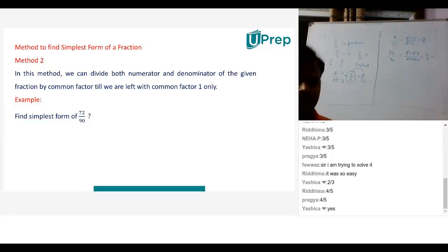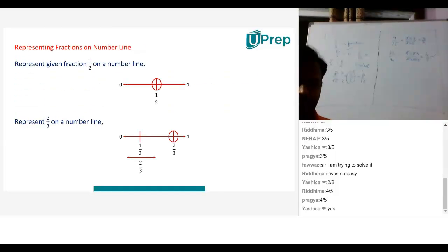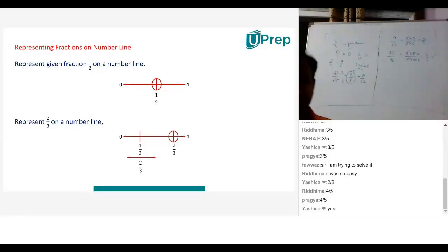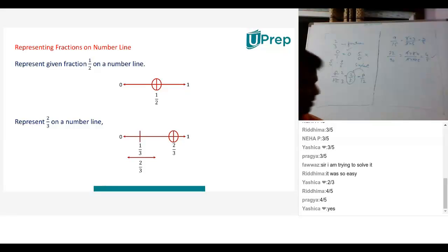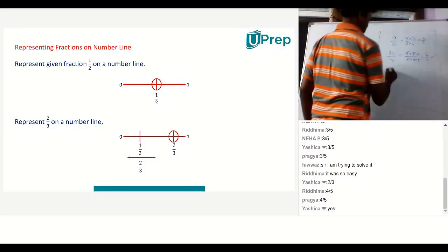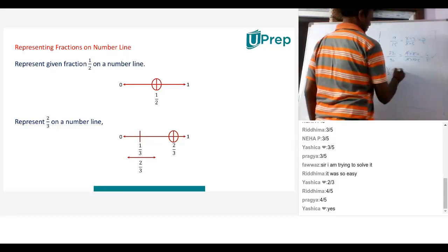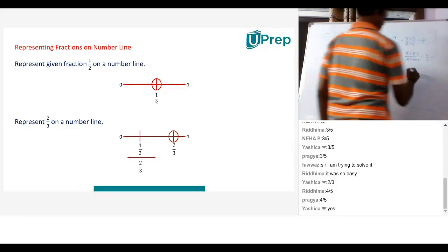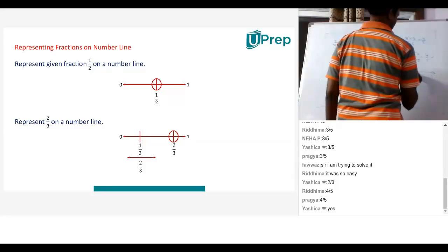Now representing the fractions on the number line. What exactly is happening here — I will talk about this example that I have given in this slide. If I have a number 1 by 2, I know 1 by 2 is 0.5. That means 0.5 will lie between 0 and 1.